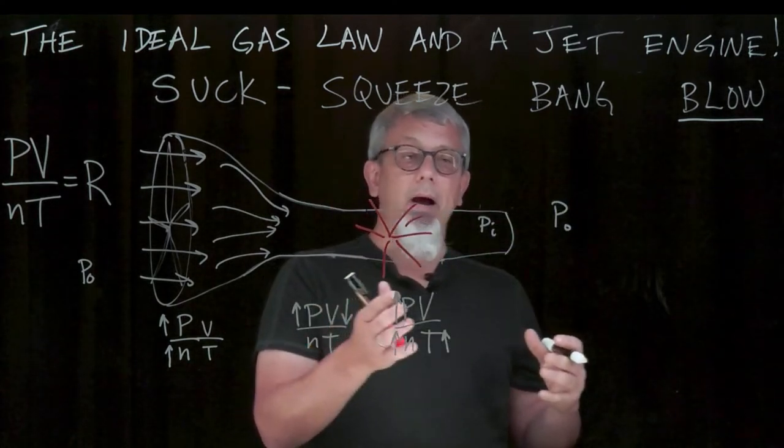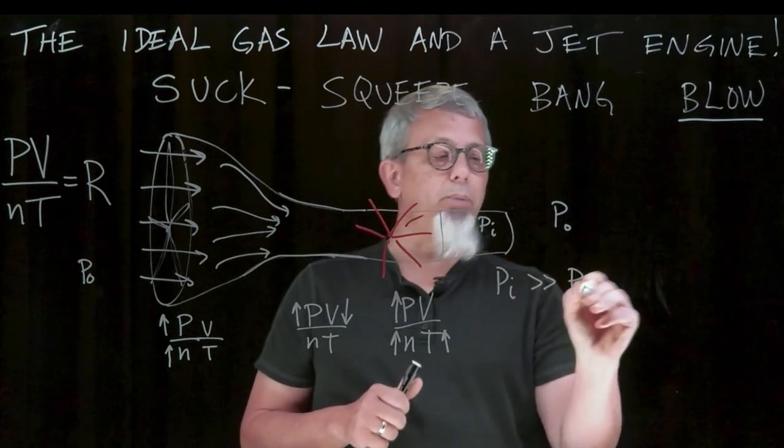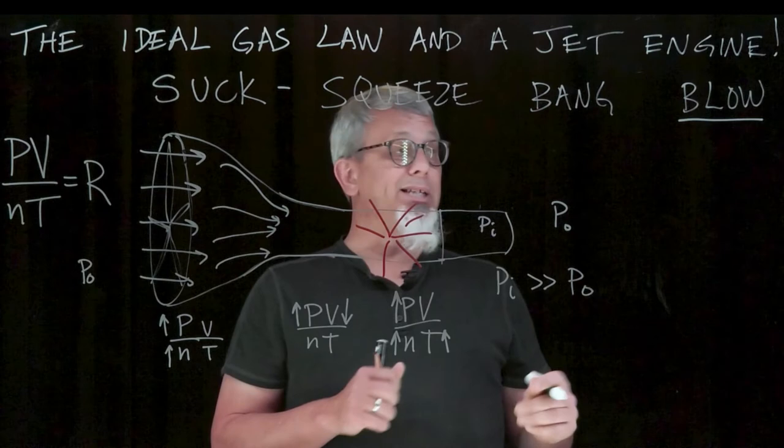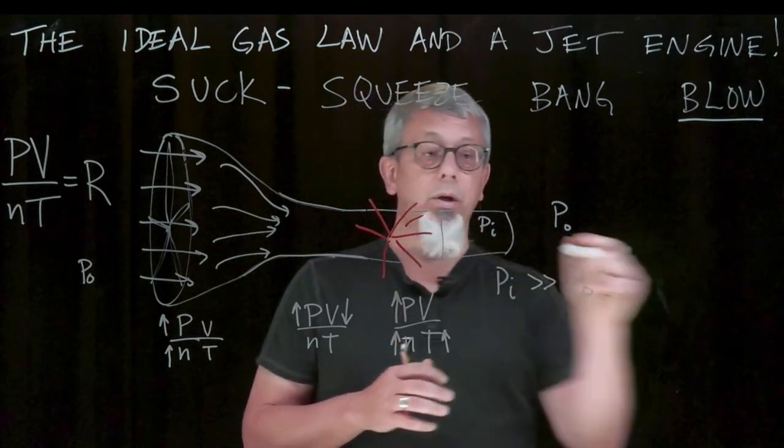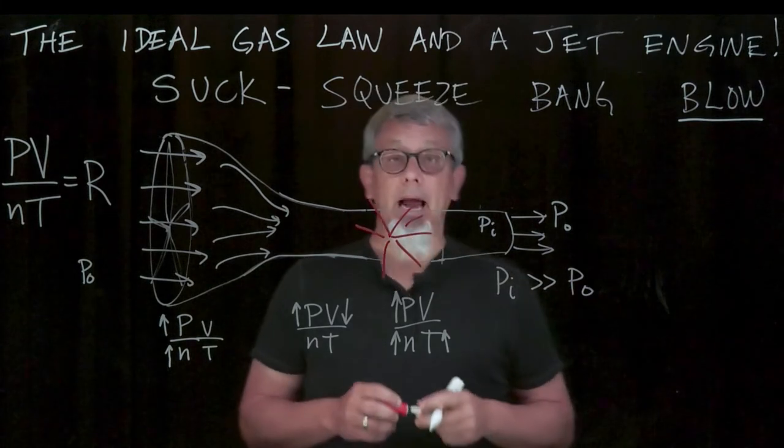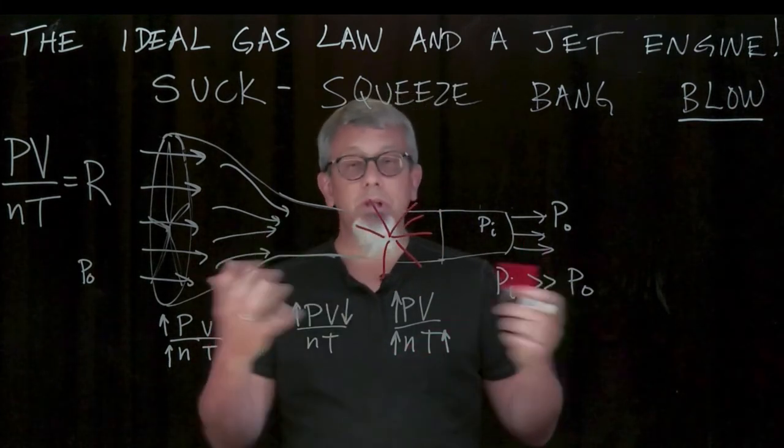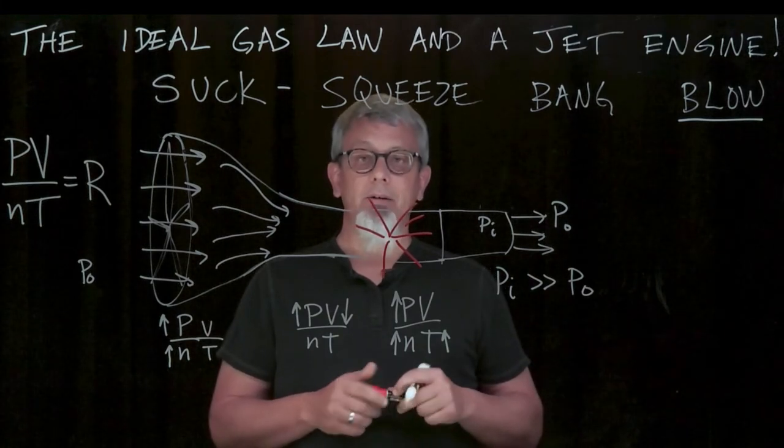And now we have a pressure inside that's a lot greater than the pressure outside, and we just let her go. We let it blow out the back. And that's how we create thrust using the principles of the ideal gas law.